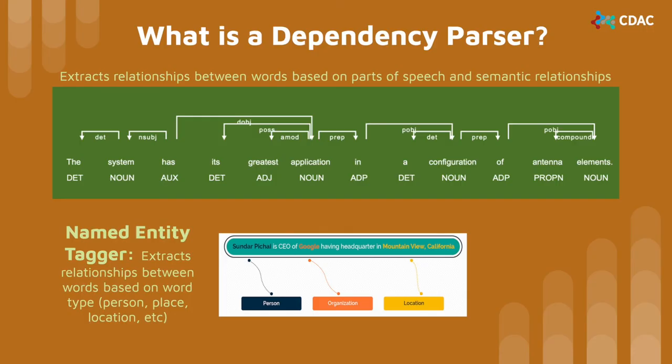For our models, we used a dependency parser provided by spaCy, which is a natural language processing toolkit, and customized it to fit our dataset needs. A dependency parser analyzes the grammatical structure of a sentence. We used a dependency parser because they are useful for extracting relationships between words using solely their parts of speech, rather than their word type, as a named entity tagger would.